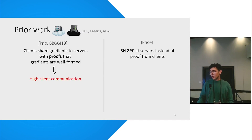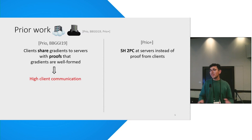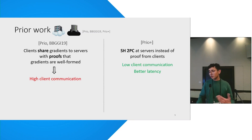There's another line of work which is more recent which takes a very different approach to solve a similar problem. In this work, clients don't send proofs to the servers — rather they just secret share their gradients to the servers and then leave the rest for the servers to decide. The servers engage in a 2PC protocol and they make sure the gradients are well-formed. This approach has low client communication and often has better latency than the proof-based approaches.